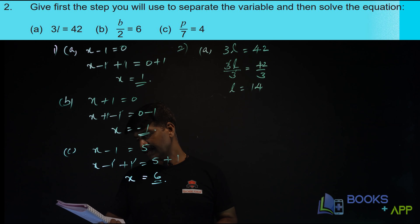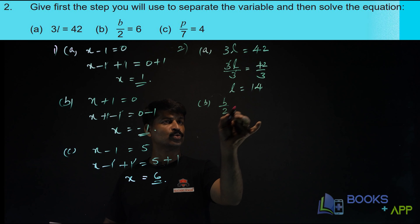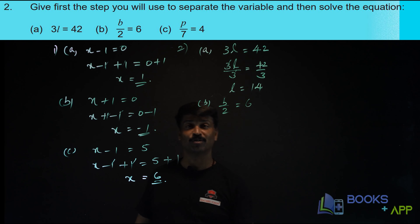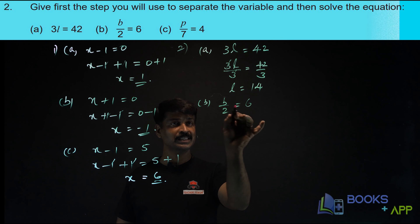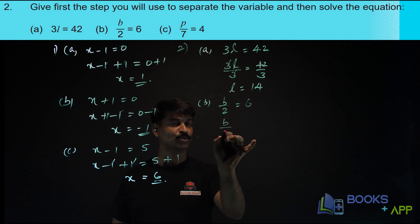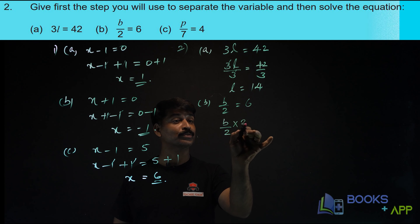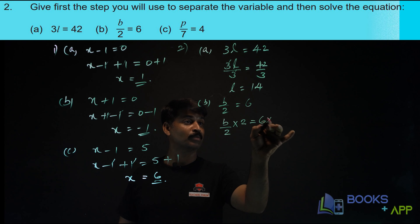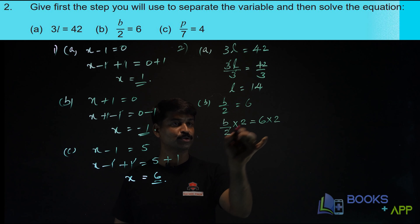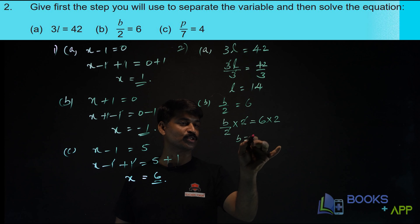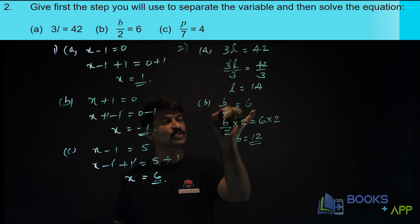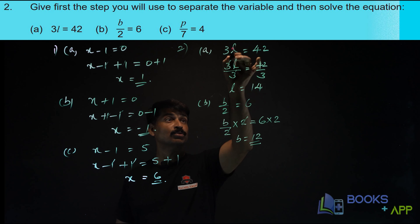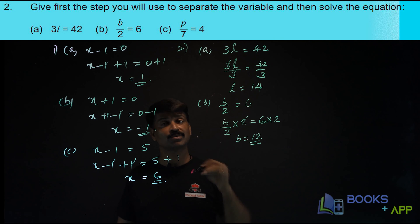Now the second one: B by 2 is equal to 6. What do you have to do? You have to find the value of B. Here B is divided by 2, so to remove this 2 you should multiply by 2, so that 2 gets cancelled. When you multiply LHS by 2, RHS also you multiply by 2. So B is equal to 6 times 2, which is 12. You substitute 12 here: 12 by 2 is 6. Here you got L equal to 14, and substituting: 3 into 14 is equal to 42.